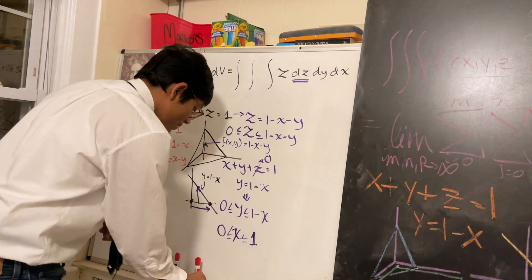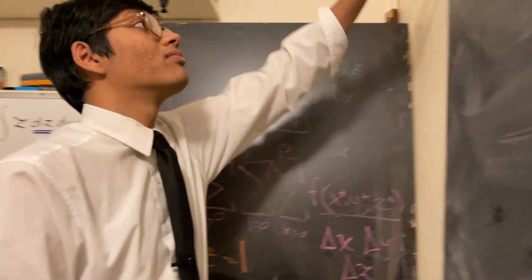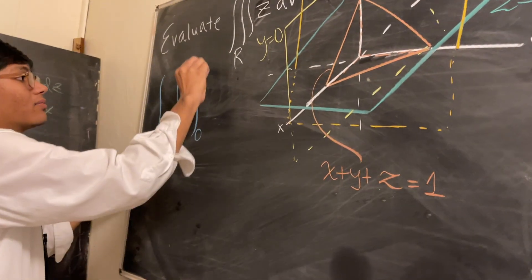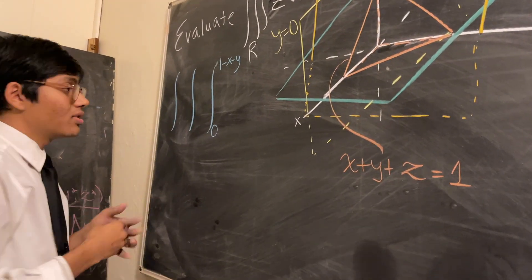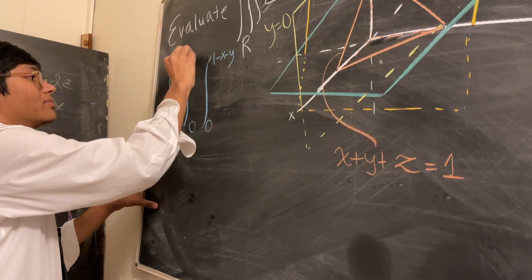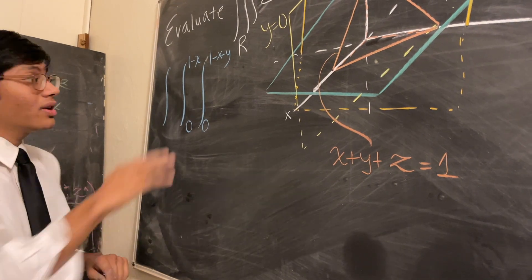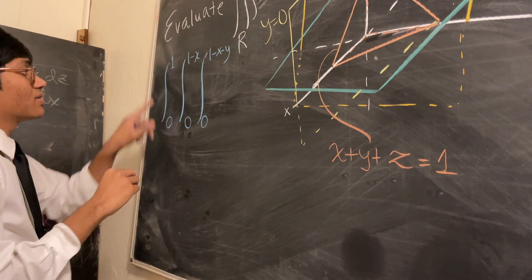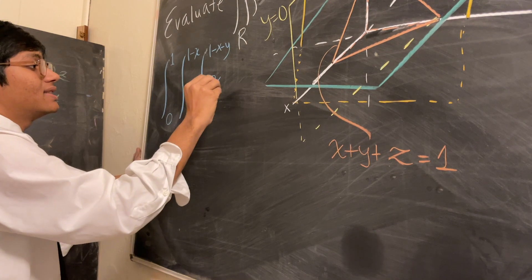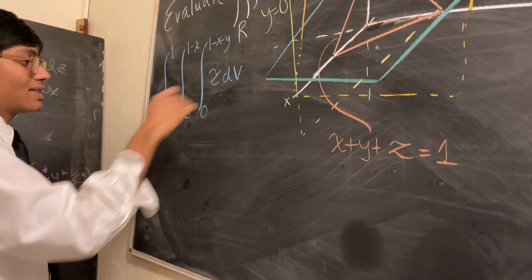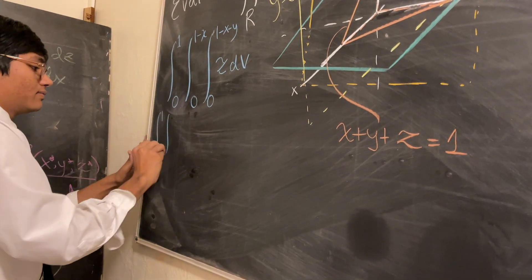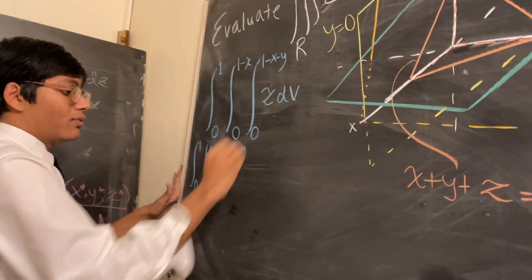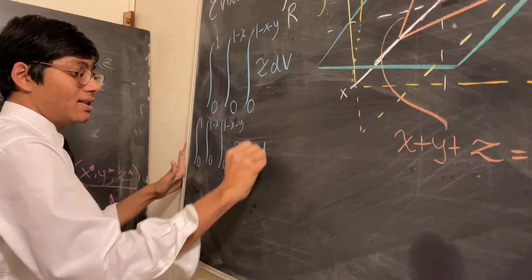Now we are ready to start the process of integrating. We have the triple integral with Z running from zero to one minus X minus Y, Y running from zero to one minus X, and X running from zero to one. The integrand is Z, so we write the integral from zero to one, integral from zero to one minus X, integral from zero to one minus X minus Y of Z dZ dY dX.